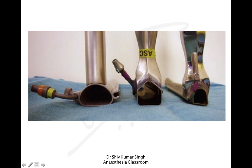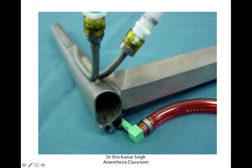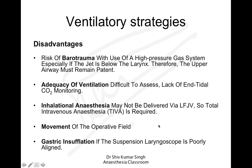These are different kinds of attachments for the suspension laryngoscope — you can have a nipple connector, a straight connector, or a jet connector. This shows a suspension laryngoscope attached to a jet ventilation device.